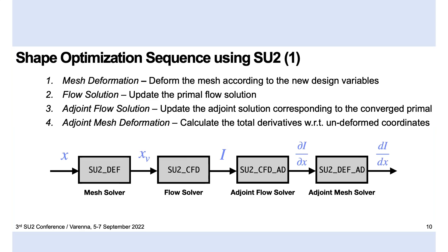So, how is this implemented in SU2? Previously, as you might know, in order to run the shape optimization with SU2, you will be running essentially four components in sequence. The first one being the mesh solver, with which you will update your computational grid in order to reflect changes in the shape.